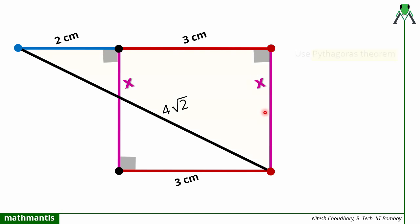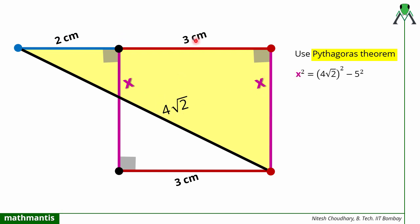We can now find x by applying the Pythagorean theorem in this right-angle triangle. The perpendicular is x, the hypotenuse is 4√2, and the base is 5 (which is 3 + 2, the sum of the two radii). So x² = (4√2)² − 5² = 32 − 25 = 7. Therefore x = √7. That is the length of the common tangent which we had to find. This is the answer to the question.